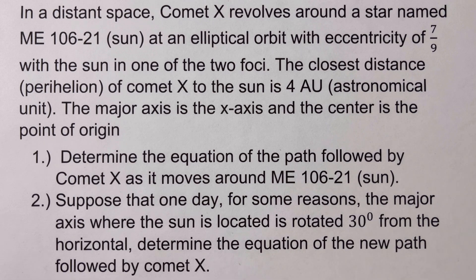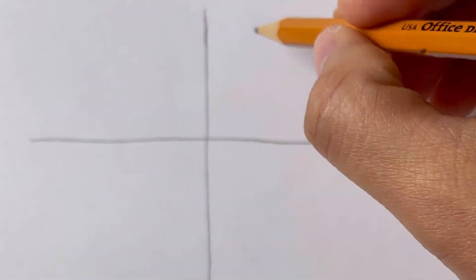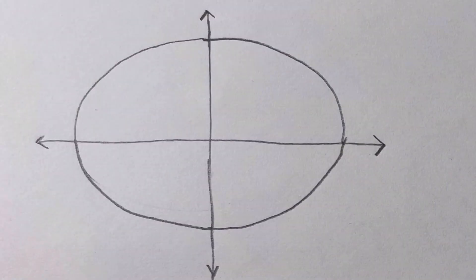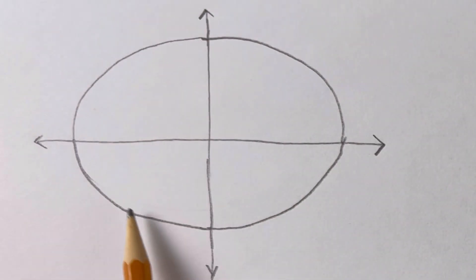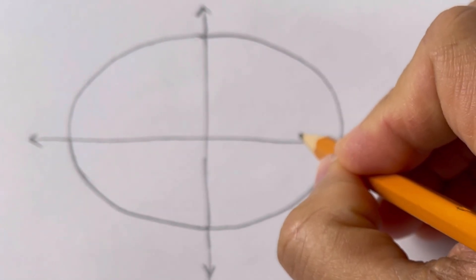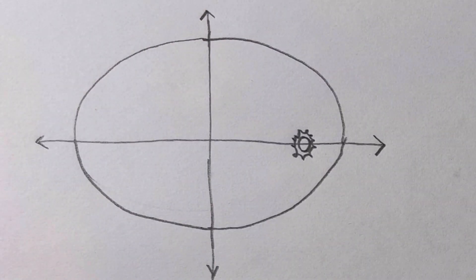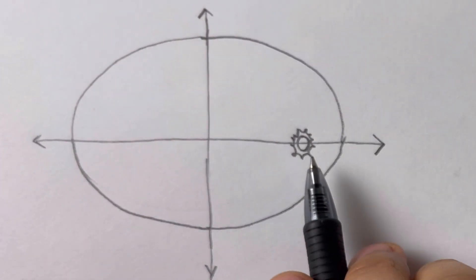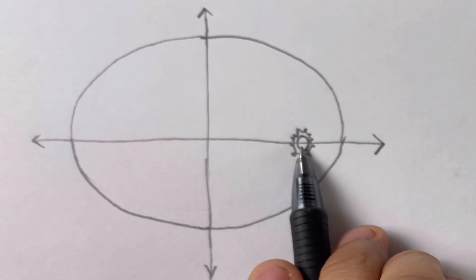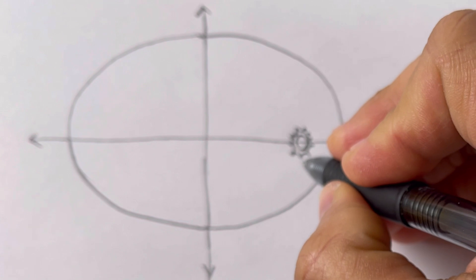Now let's start with the first problem. To get a better picture of how Comet X moves around the star ME 106-21, let's sketch the ellipse or the path. This is the path followed by Comet X, and the sun is located in one of the two foci. The distance of the comet to the sun at its nearest point — the perihelion — is four astronomical units.